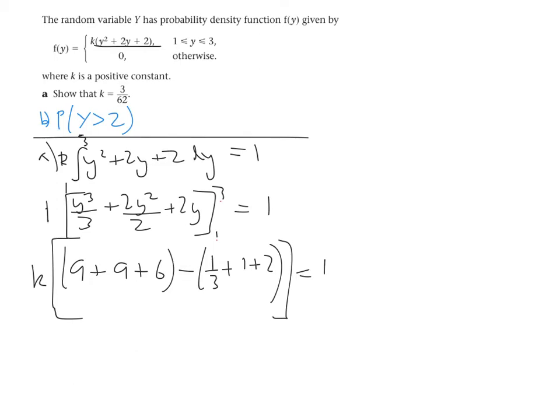I've forgotten to put my k outside of the integration on that second line, so I've just added that back in. If we calculate all of those numbers in the brackets here, we should get that k multiplied by 62 over 3, and that equals to 1. So if we isolate k, we should get k equals 3 over 62. So we have now proved that k is 3 over 62.